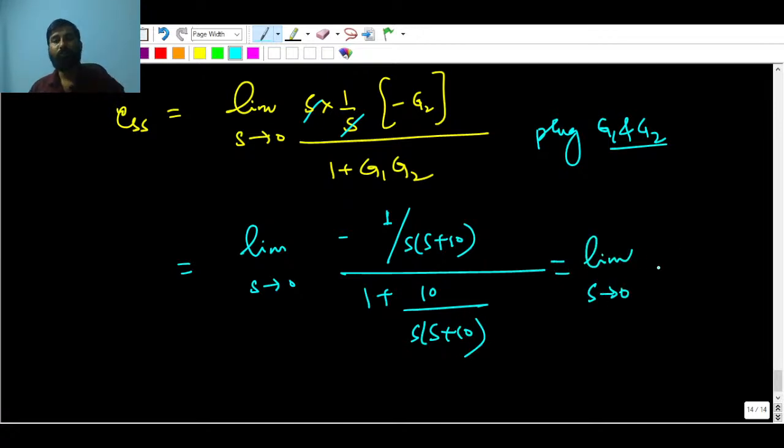S tending to 0, see in the denominator s(s+10) will be there. So you can cancel them. So it is going to be -1/(s(s+10) + 10). Now you can just keep s = 0. So this will be completely 0. Your overall answer will be 1/10 plus -0.